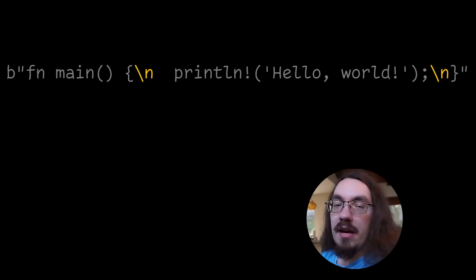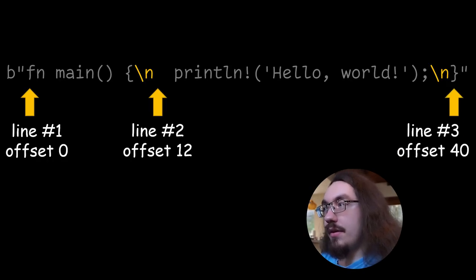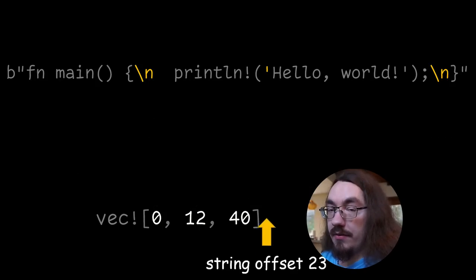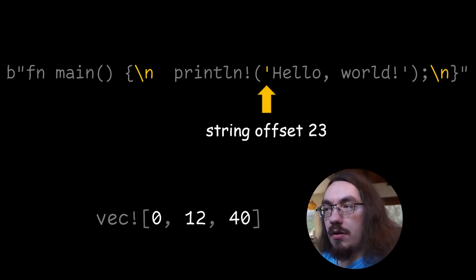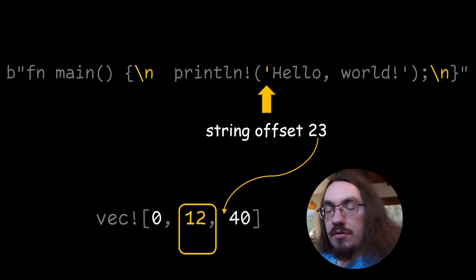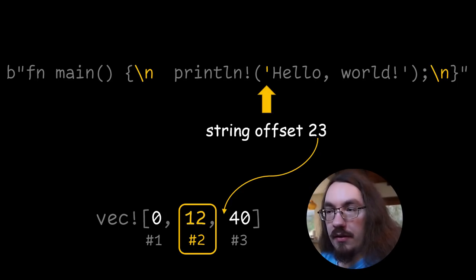Let's talk about another algorithm. What if we pre-compute some data — specifically, where each line starts? The first line starts at offset zero, the second at offset 12, the third at offset 40. We put all these numbers into a vector. When we need the line number given an offset, we search the vector to find what line that offset is on. Offset 23 is between offsets 12 and 40, so it must be on the second line. Rust vectors are zero-based and line numbers are one-based, so we add one to the vector index to get the line number.